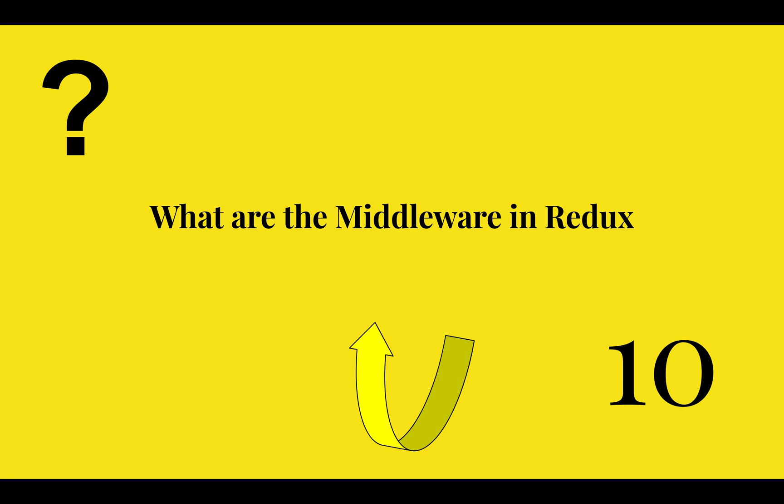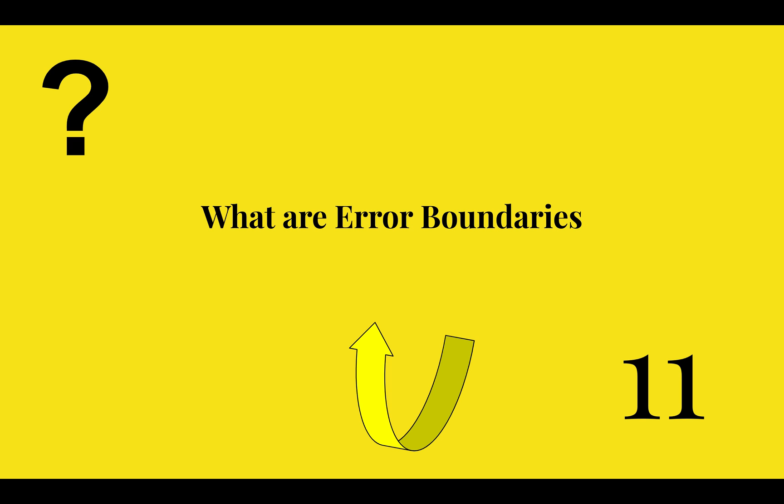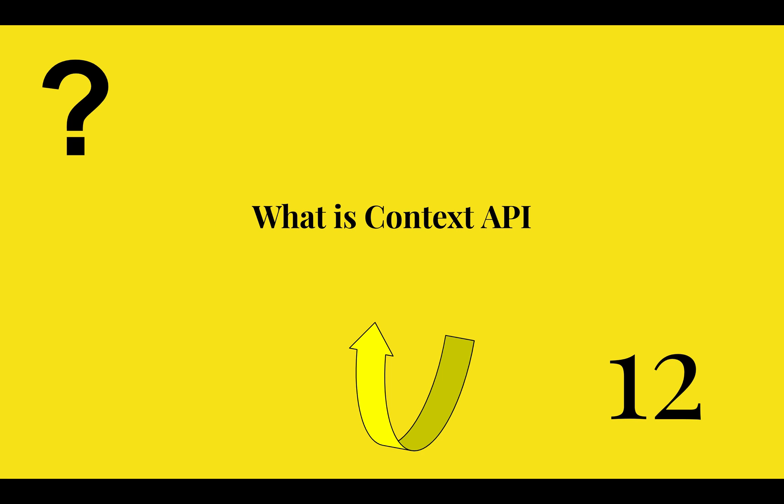What are the middleware in Redux? What are error boundaries? The twelfth question: what is context API?